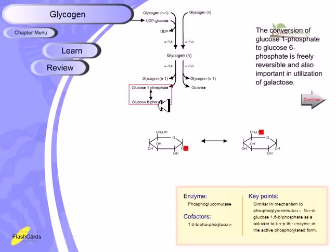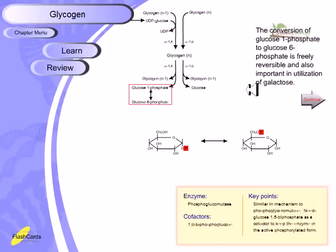This conversion is mediated by the enzyme phosphoglucomutase. The cofactor for this enzyme is glucose-1,6-bisphosphate, which is very important in this case. The key point is that phosphoglucomutase requires glucose-1,6-bisphosphate as a cofactor to keep the enzyme active in its phosphorylated form.